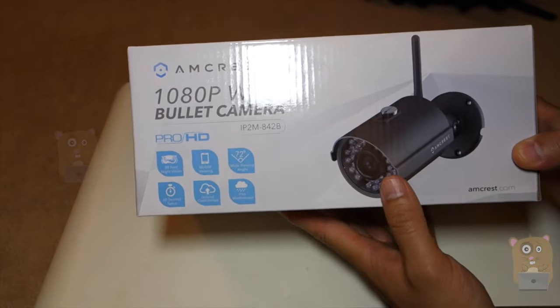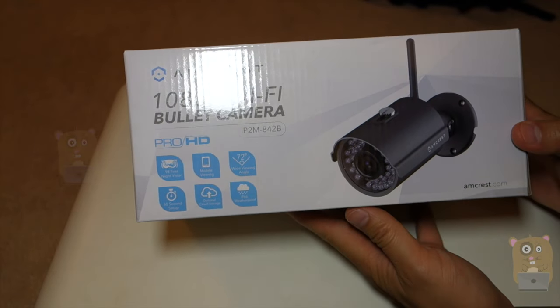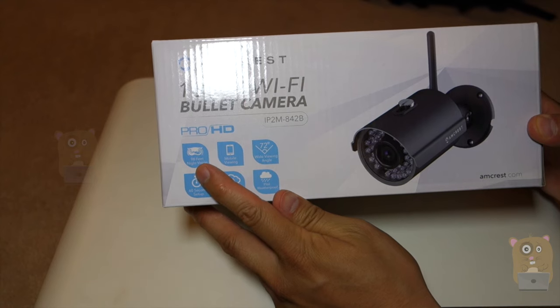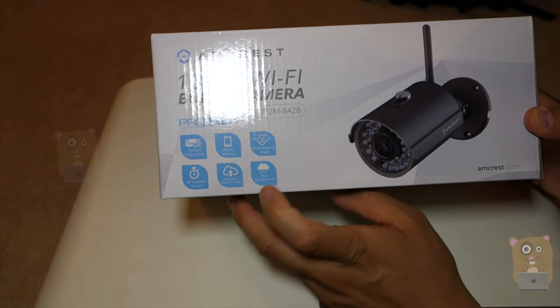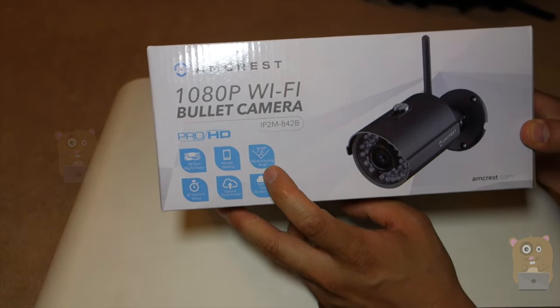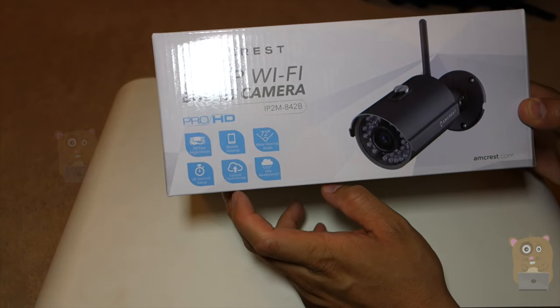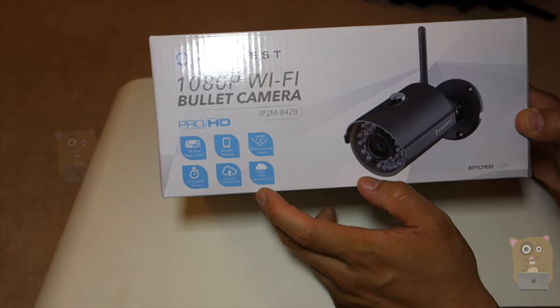And before I open it up, let's look at some highlights on the box. So for the night vision and the LEDs, it has a range of 98 feet. There's mobile viewing. It has a view angle of 72 degrees. It advertises easy setup, optional cloud storage, and IP66 rated.